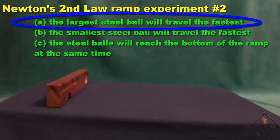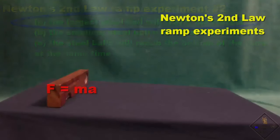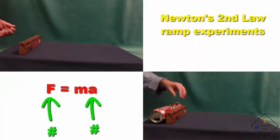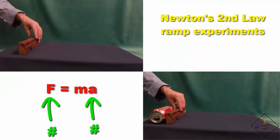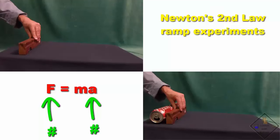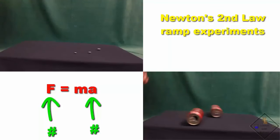We can see that acceleration is definitely present in these ramp experiments for all the objects rolled down the ramp. So that means with each object there is an unbalanced overall net force. Do you know what that force is?